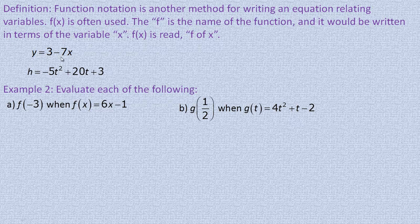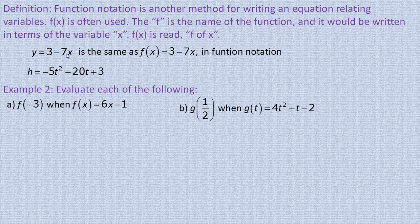You may have seen something like this before in y equals mx plus b form: y equals negative 7x plus 3. We can write that in function notation as f of x equals 3 minus 7x. Notice x is the variable used in the function. It doesn't have to be called f — it could be g of x, b of x, or q of x. F is often used because the word function starts with f.